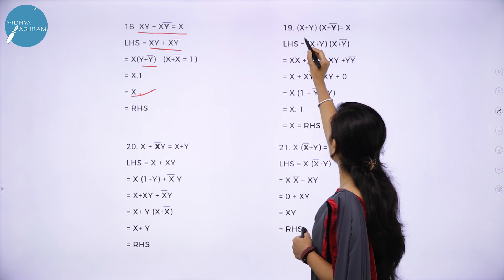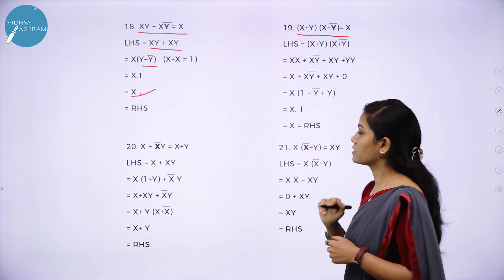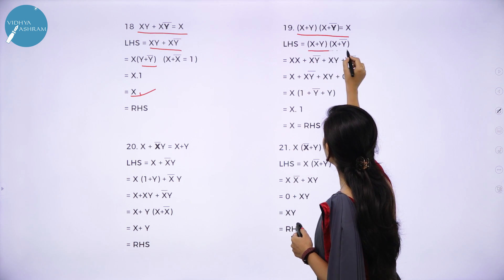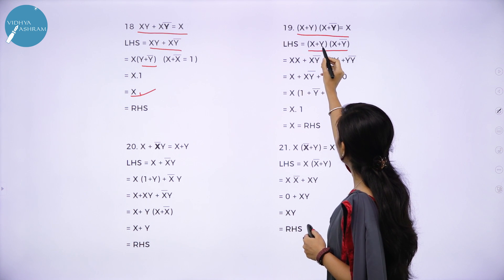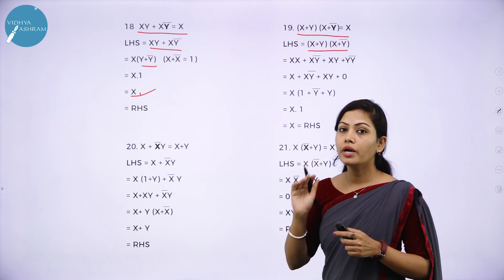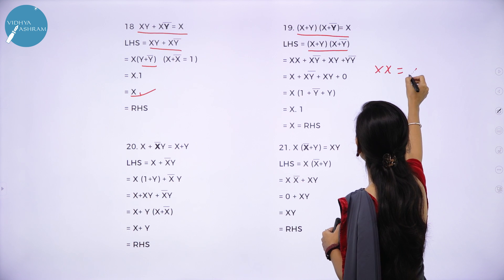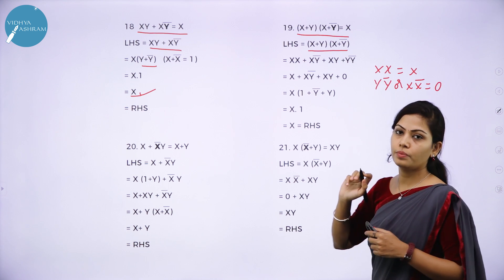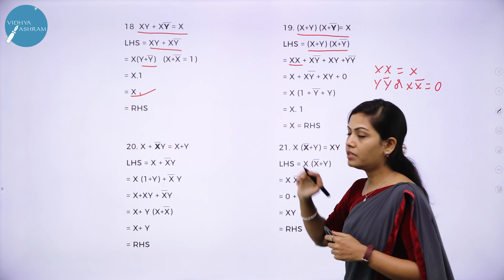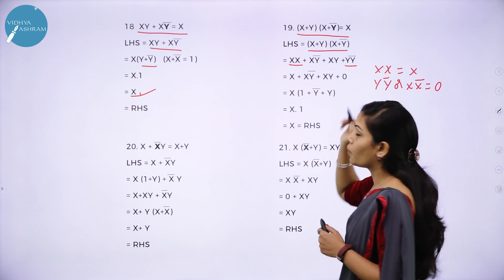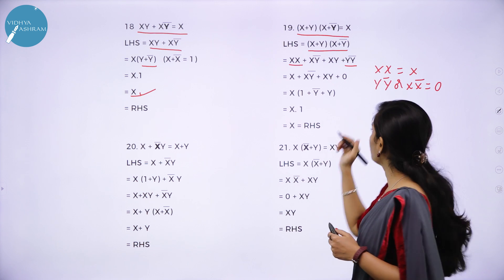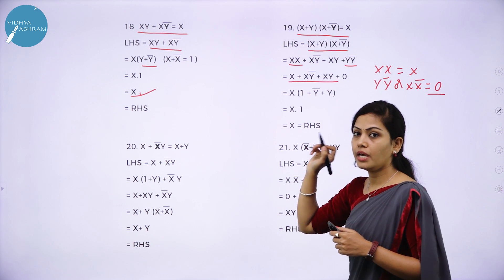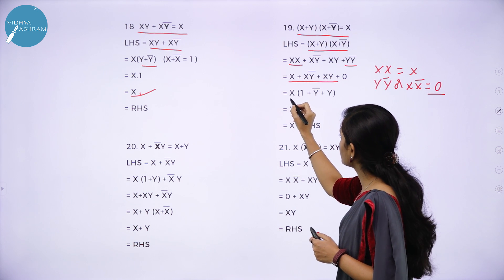Theorem 19: (x + y)(x + y̅) = x. LHS is (x + y)(x + y̅). Multiplying these two terms: x·x + x·y̅ + y·x + y·y̅. Since x·x = x and y·y̅ = 0, in place of x·x write x, and y·y̅ write 0. You will get x + xy̅ + xy. Here x is a common factor, giving x(1 + y̅ + y).